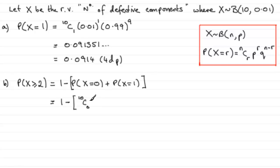Probability of success is 0.01 and that's raised to the power 0. And probability of failure, 0.99, that's to the power 10.